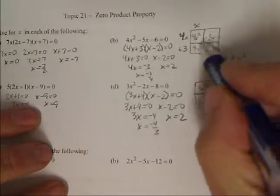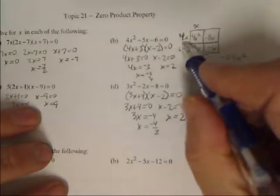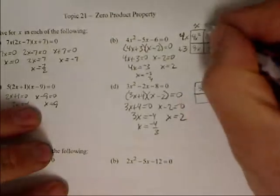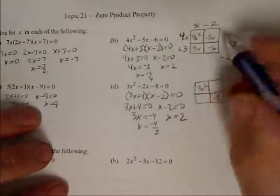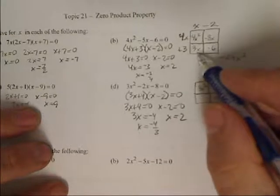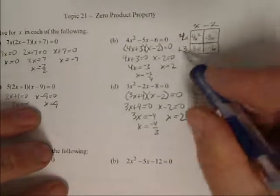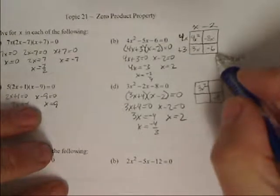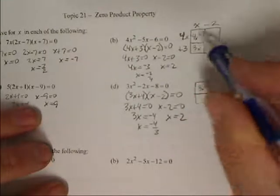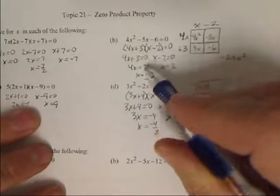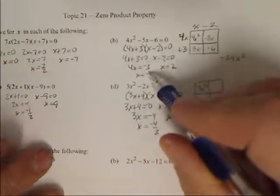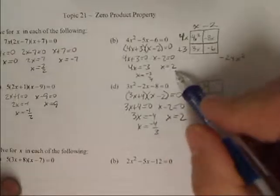I can factor out a 4x, then I have 4x times x is 4x squared, 4x times negative 2 will give me negative 8x. X times 3 gives me 3x, and then my check is negative 2 times 3 is negative 6. So that means we factor to 4x plus 3 times x minus 2. Again set each one equal to 0, then I solve it. So I get x equals negative 3 fourths, x equals 2.